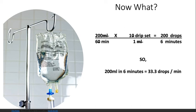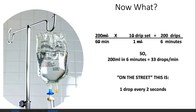You should have gotten 33.3 drops per minute, which we round off to about 33 drops per minute. To dial this in with the roller clamp, we figure out how many drops per second. About 33 drops per minute works out to one drop every two seconds. So we dial that in, watch the drip chamber, and there we have it. I hope this helped — let me know if you have any questions, see you in class!